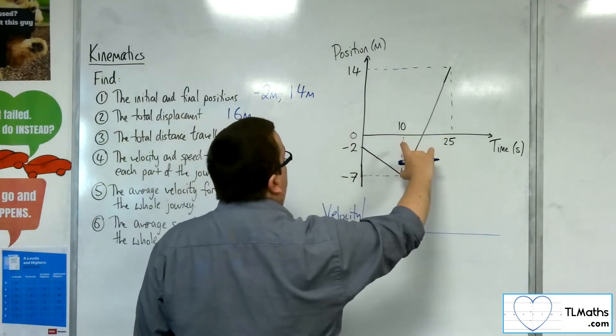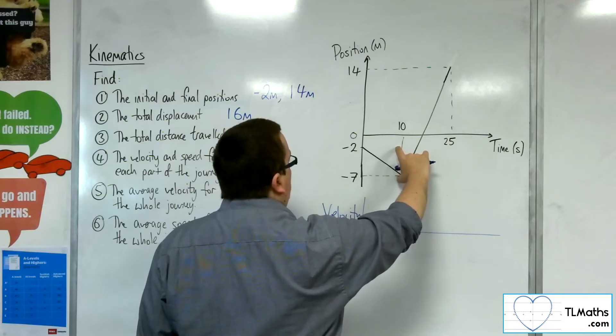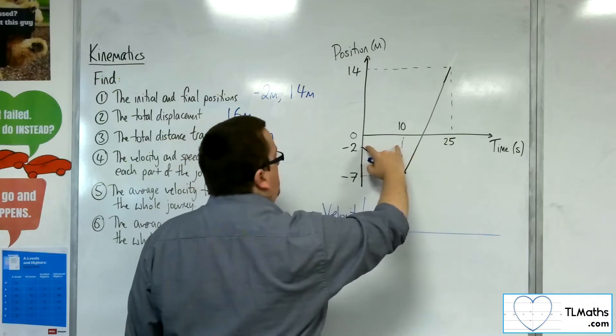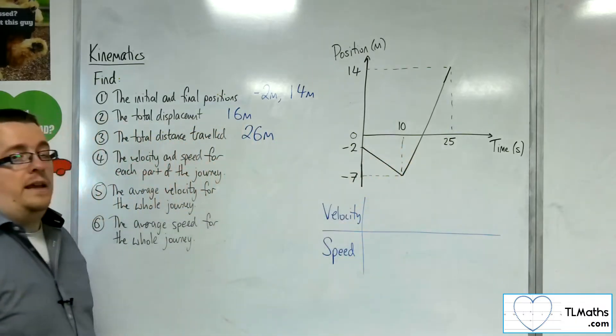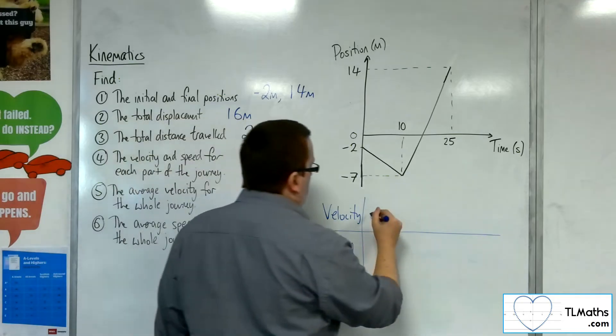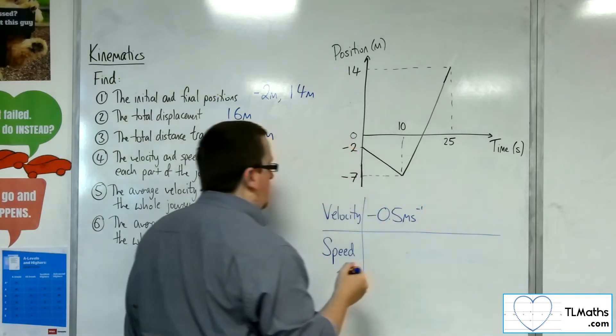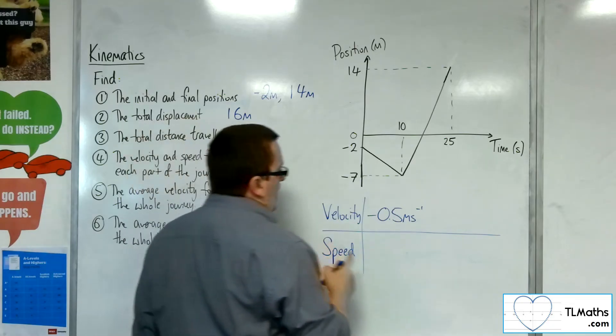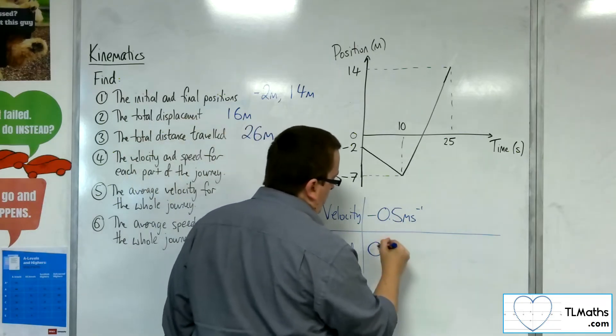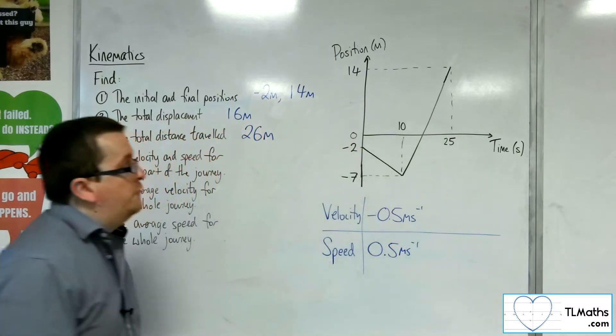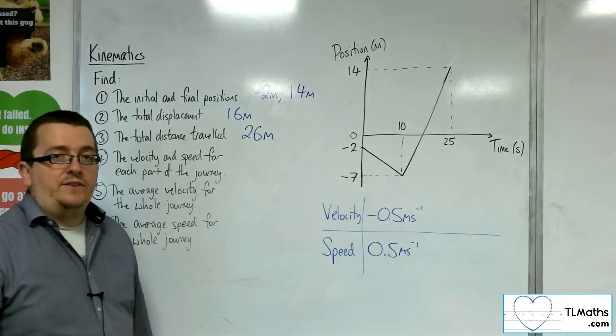we've got the difference in the position, which is going to be minus 5, and then divide that by the time. So minus 5 divided by 10 is minus 0.5. That would be my velocity. The speed, however, is that I am travelling at 0.5 metres per second, because I'm covering 5 metres in 10 seconds.